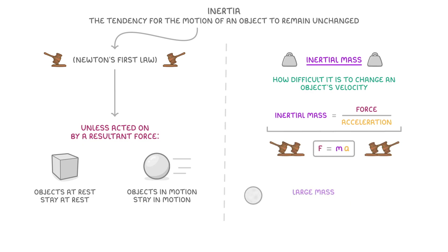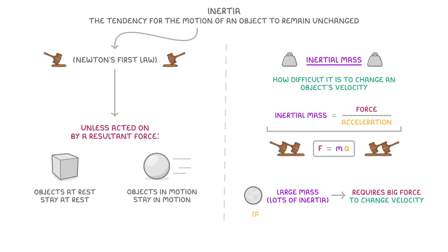So basically a large mass, like the moon, will have a lot of inertia, so will require a really big force to change its velocity. And even then, the acceleration will probably be quite small.